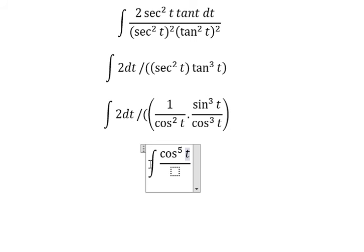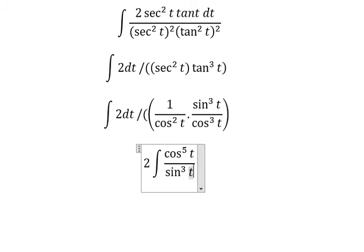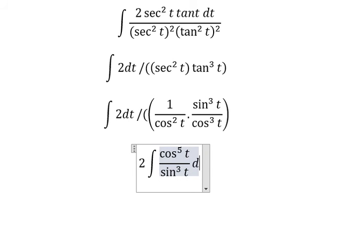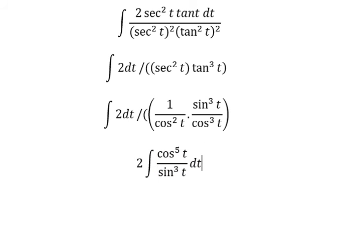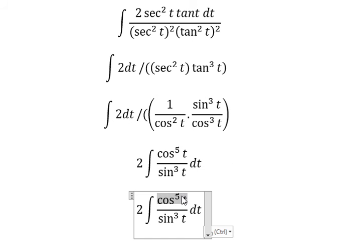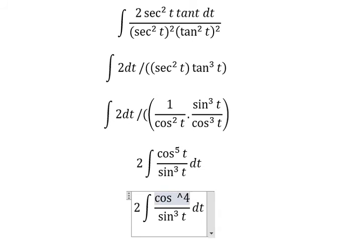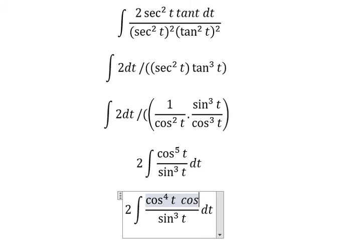We put the number two in here, and the denominator is sine t to the power of three, dt. Next, cosine t to the power of five can be written as cosine t to the power of four multiplied by cosine t.